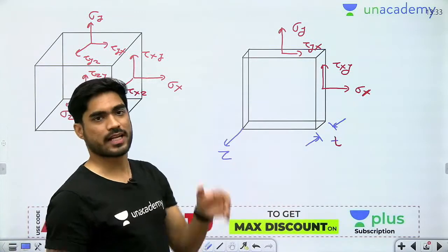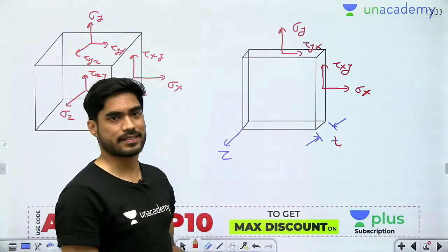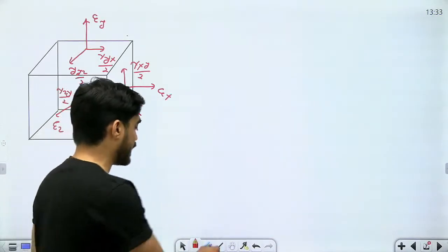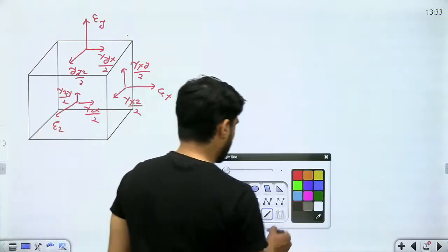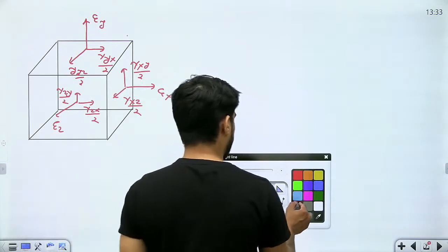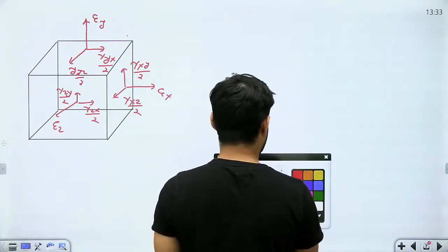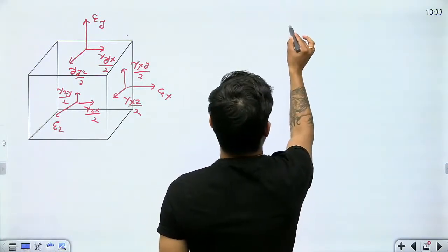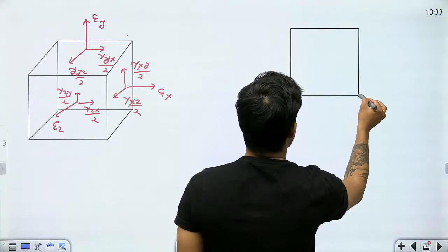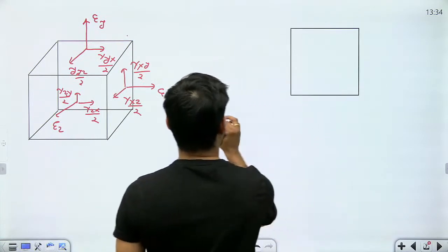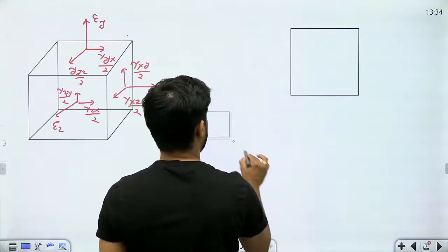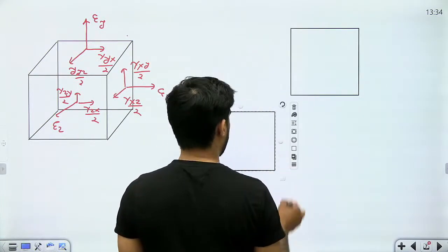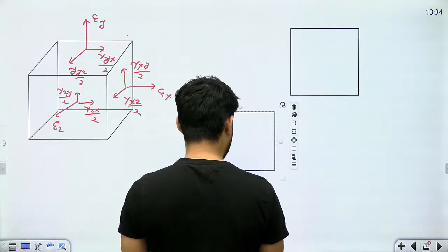Now in case of plane stress condition, the thickness is negligible, which is why we can ignore the stress in the z direction. But in case of plane strain condition, the condition is actually exactly opposite.